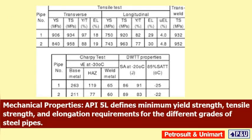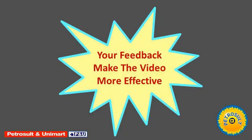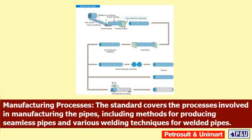Mechanical properties: API 5L defines minimum yield strength, tensile strength, and elongation requirements for the different grades of steel pipes. Manufacturing processes: The standard covers the processes involved in manufacturing the pipes, including methods for producing seamless pipes and various welding techniques for welded pipes.